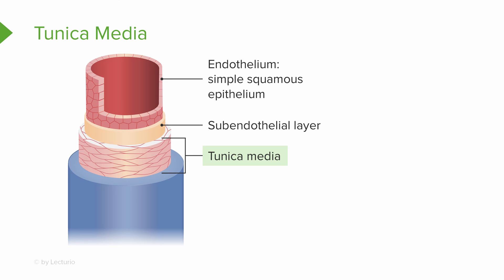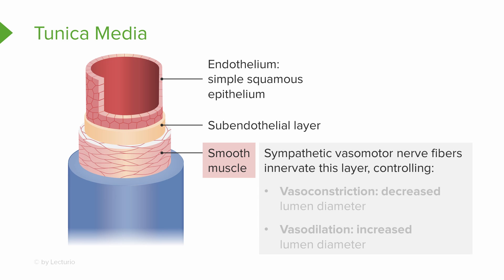The next layer, or the middle layer, is our tunica media. This is composed of mostly smooth muscle tissue and sheets of elastin. It also contains sympathetic vasomotor nerve cells, which are going to control vasoconstriction — leading to a decrease in our lumen diameter — or vasodilation, which leads to an increase in the diameter of the lumen. This is our bulkiest layer and is responsible for maintaining blood flow as well as blood pressure throughout the body.